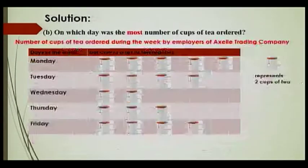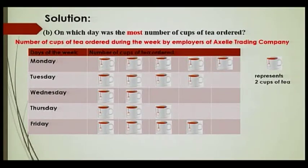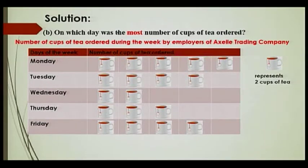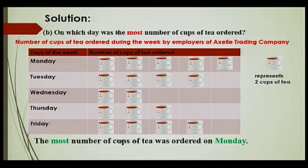Part B: On which day was the most number of cups of tea ordered? Looking at the pictogram, you can see that on Monday we have five pictures of cups of tea. So on Monday we have the most number of cups of tea ordered.